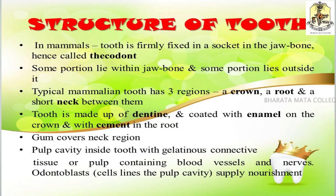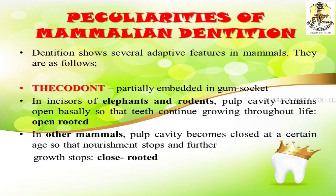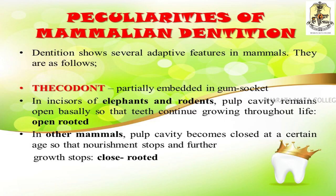The peculiarities of mammalian dentition show several adaptive features depending on food and feeding habits. First is thecodont dentition, meaning the teeth are embedded in a socket in the gum. Hypsodont dentition means that the incisors of elephants and rodents have an open pulp cavity at the base and continue to grow throughout life — also known as open-rooted teeth. Brachydont dentition is seen in animals like dogs, where the pulp cavity becomes closed at a certain age so that nourishment stops and growth ceases — known as close-rooted teeth.